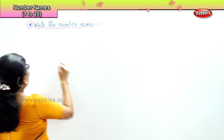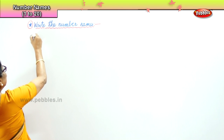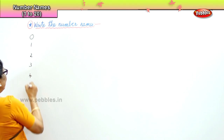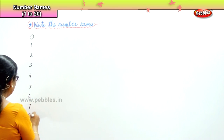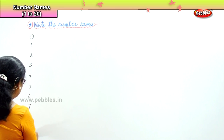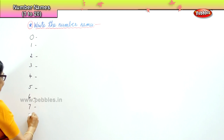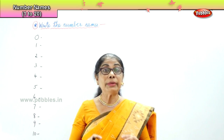Now, first of all, every numeral has a name and the spelling has to be very correct. We will begin with number names: 0, 1, 2, 3, 4, 5, 6, 7, 8, 9 and 10. Each of these numerals has a very special name and we must know it carefully.